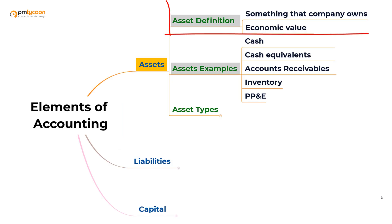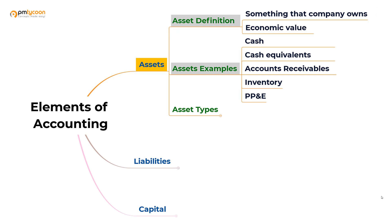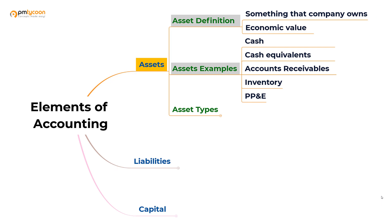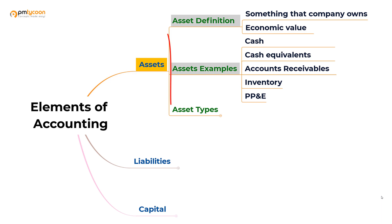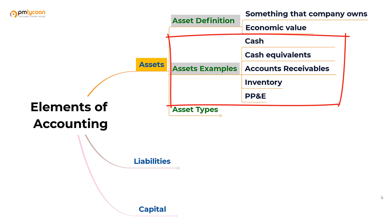Assets are the items that your company owns that can provide future economic benefit. At the opposite side of assets, we have liabilities. Assets put money in your pocket. Liabilities take money out of your pocket.